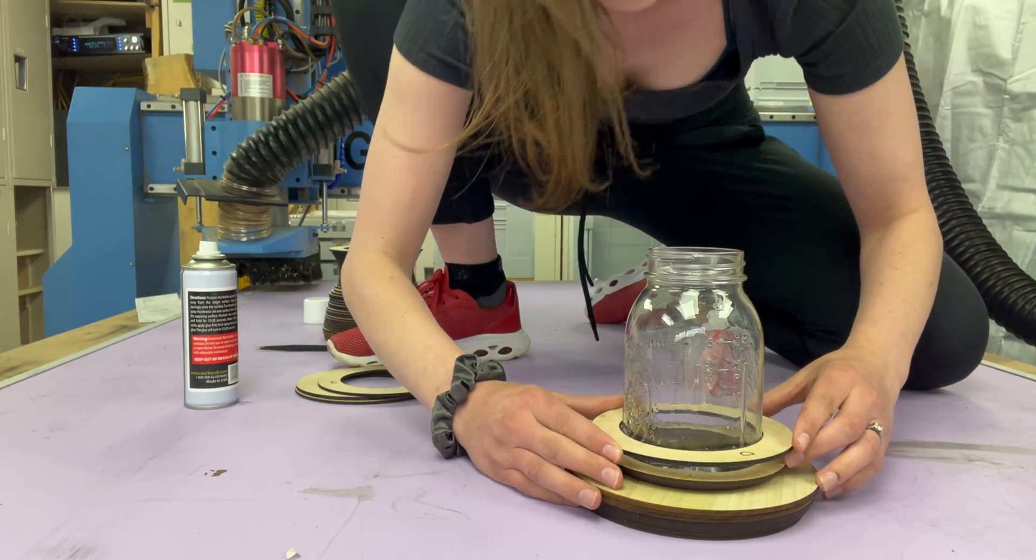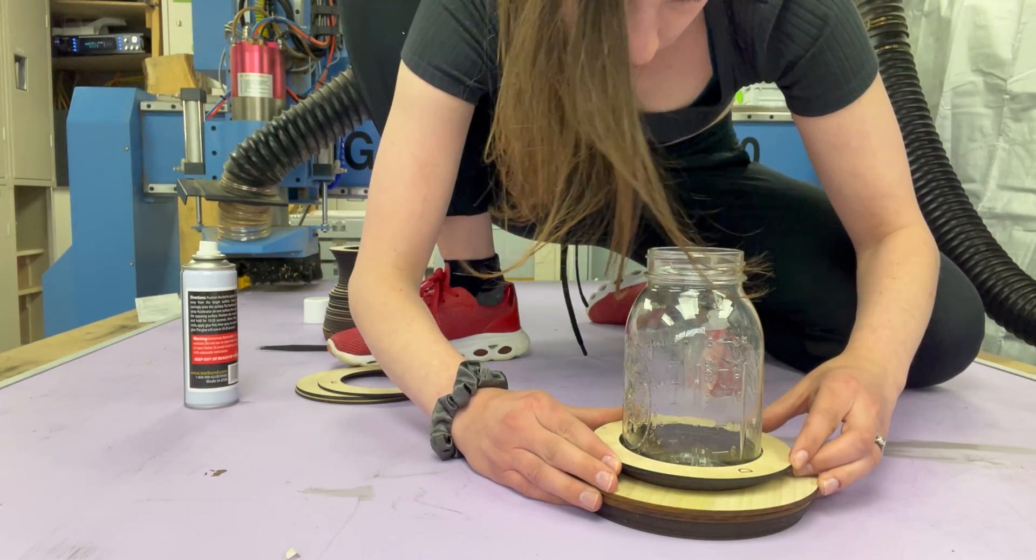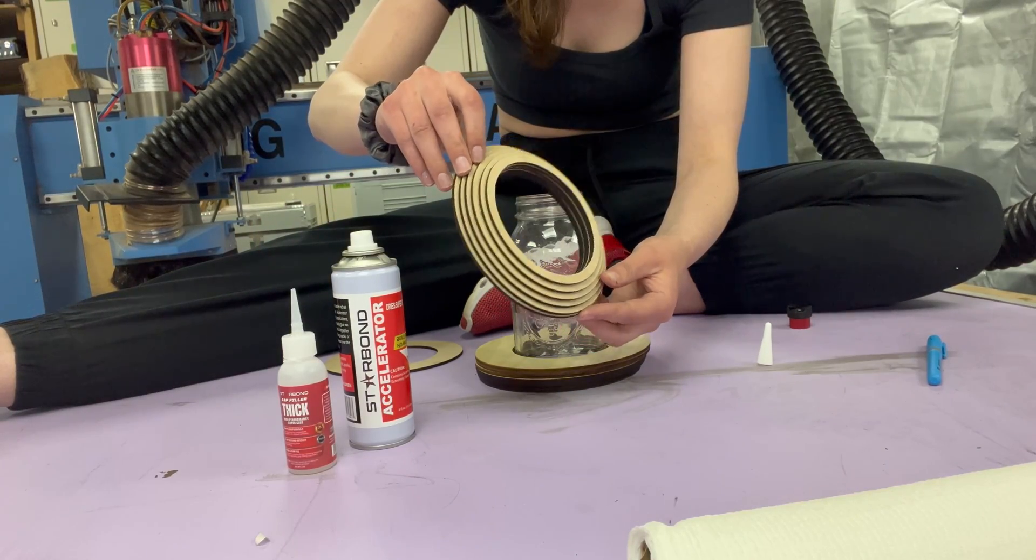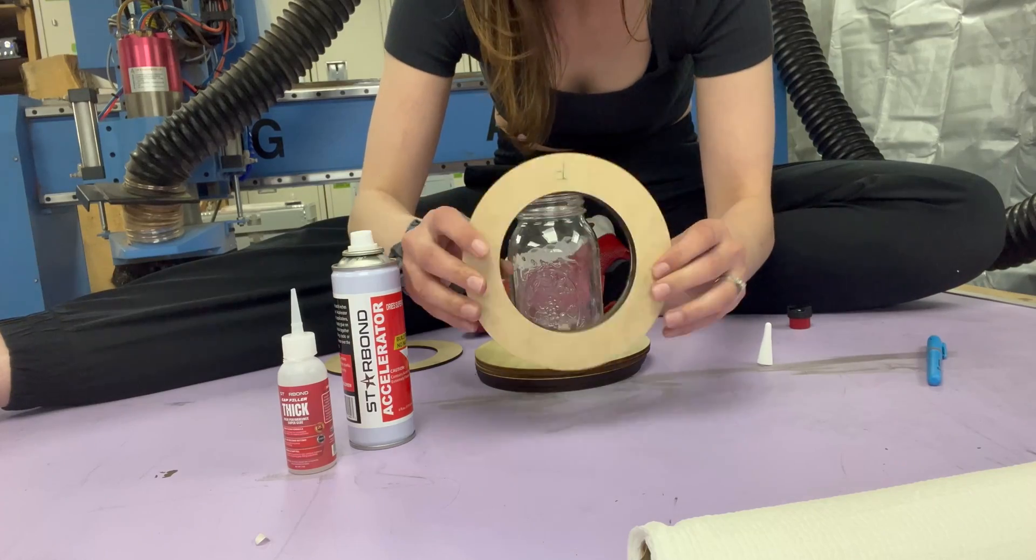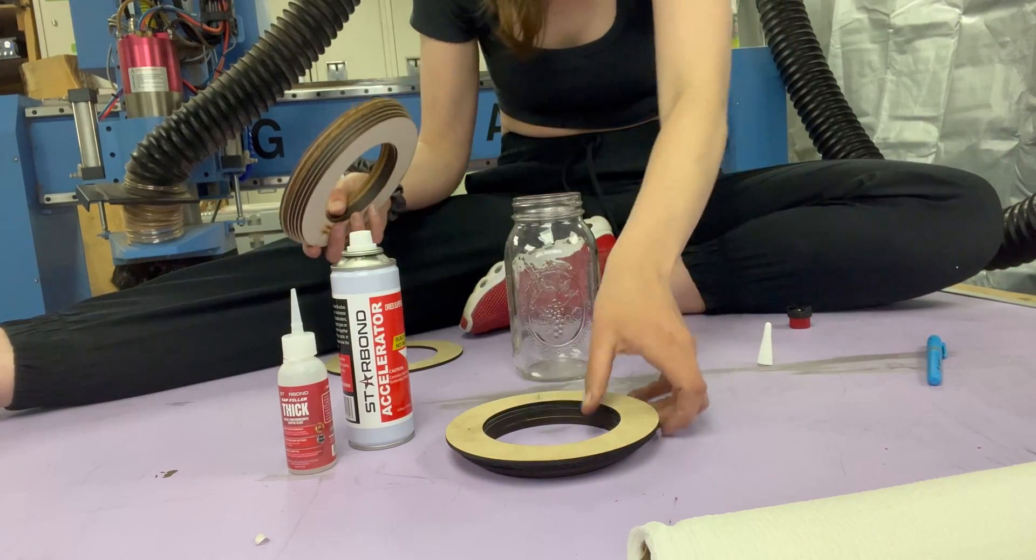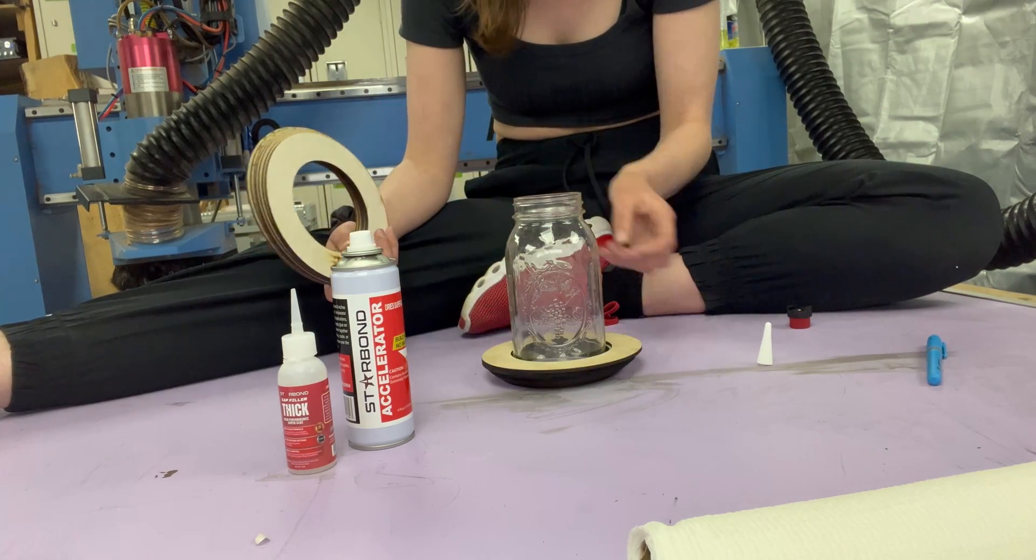I'm spraying each ring that I stack on with activator, so it's pretty much an instant bond the second this hits the ring below it. As the pieces of draft board started getting stuck together, it actually has a really nice finish, feel, and hold to it, which is something I care a lot about in projects. It has good weight, feels nice, which is cool. All right, it's time to build the rest of it.